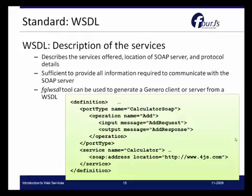WSDL stands for Web Services Description Language and describes the services offered, the location of the SOAP server, and protocol details. The WSDL is sufficient to provide all the information required to communicate with the server. In Genero, the FGL WSDL tool can be used to generate a Genero client or server from a WSDL. In this example, there is a service named calculator with a particular location, and within this description we can see an operation called add, which has input and output of add request and add response. This is the information used to create a web service from an existing WSDL, or to provide WSDL information for anyone wanting to use your service.